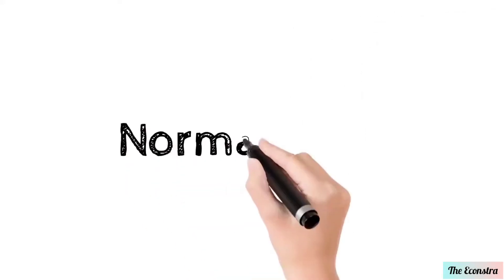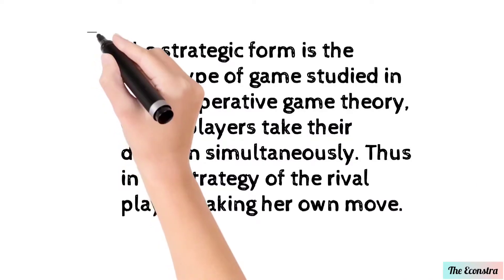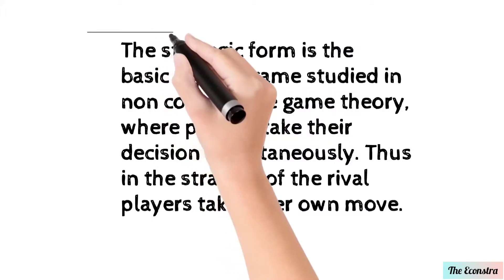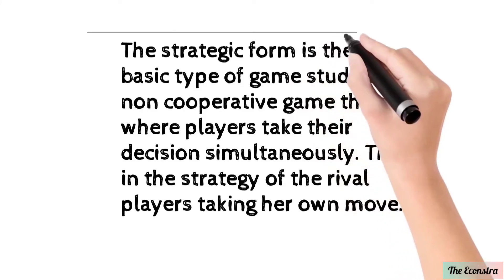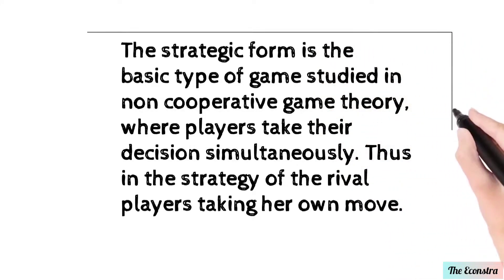Normal form: The strategic form is the basic type of game studied in non-cooperative game theory, where the players take their decisions simultaneously. Thus in this strategy, the rival players are unaware of each other's moves.